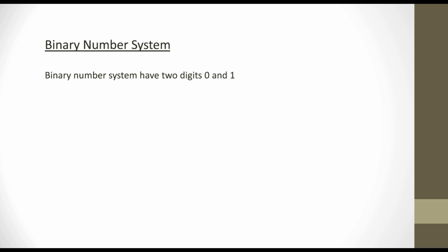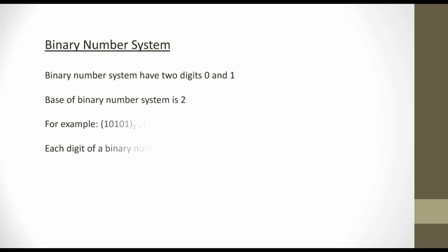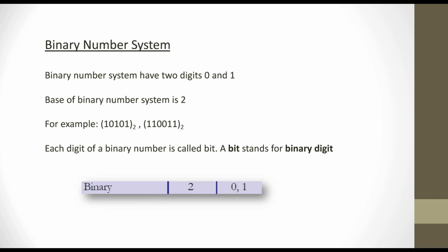Next, the binary number system. Binary means two. The binary number system has two digits: zero and one. So the base of a binary number system is 2. For example, 0101011 base 2, or 110011 base 2. In the binary number system we use only zeros and ones. Each digit of a binary number is called a bit. A bit stands for binary digit. So a bit is zero or one, and the base is two.